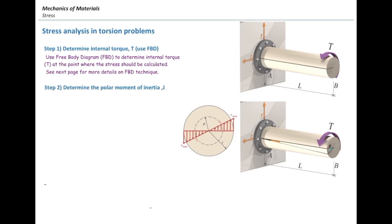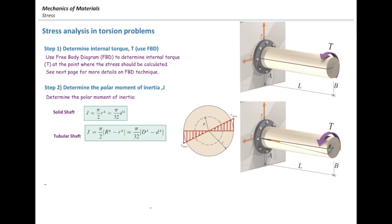The second step would be determining the polar moment of inertia. There are two equations: one for solid shafts and another one for tubular or hollow core shafts. And the last step is to use the stress equation to determine how much stress — the stress equation is Tc over J, so torque multiplied by C divided by polar moment of inertia.